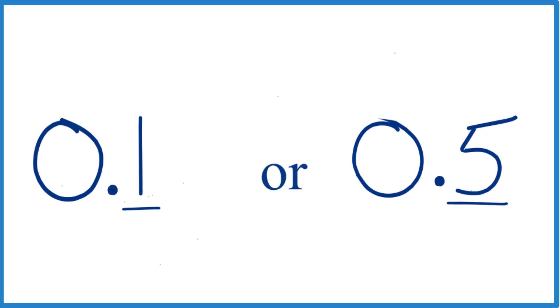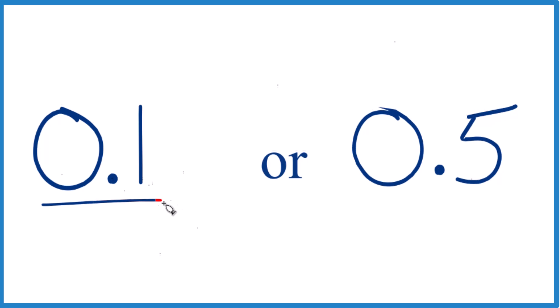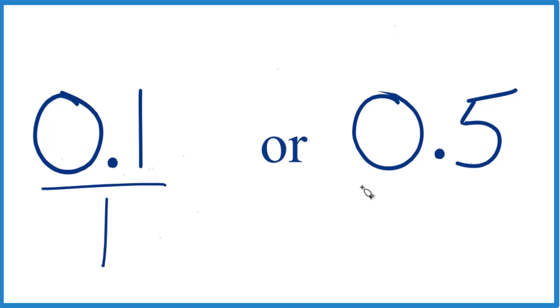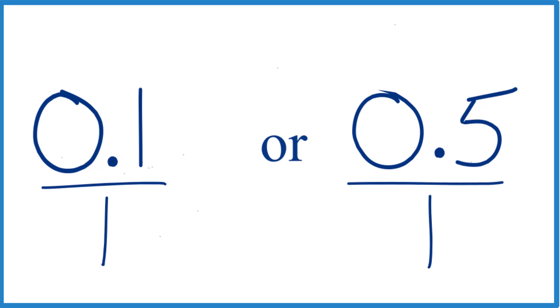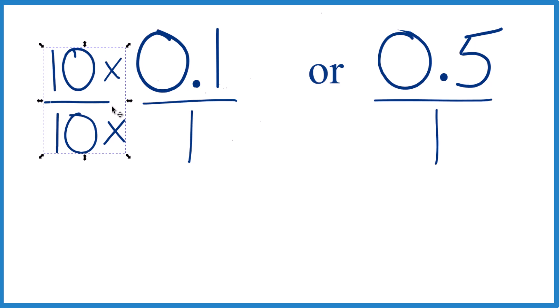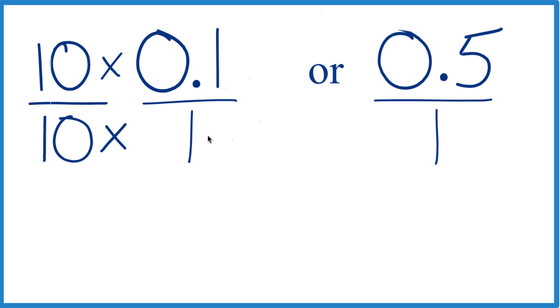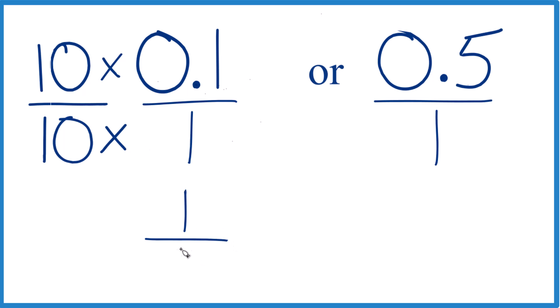You can see pretty clearly that 0.5 is greater than 0.1. The other thing we could do is convert these numbers to fractions. So let's write 0.1 over 1 — it's still 1, we're just dividing by 1. Same thing here. Now we can multiply the numerator by 10 to get a whole number, but we also need to multiply the denominator by 10, giving us 10 over 10, which is just 1.